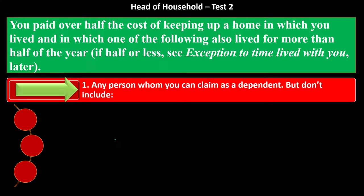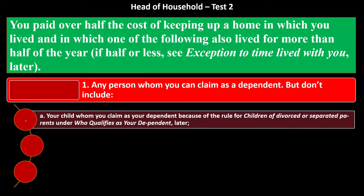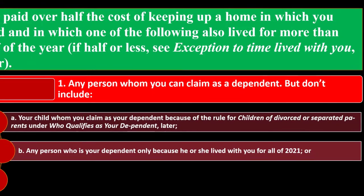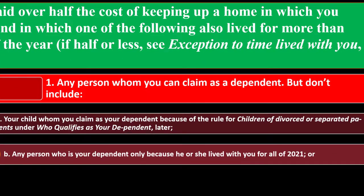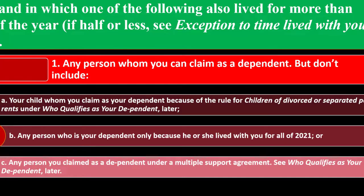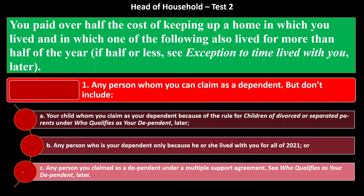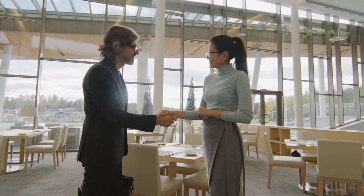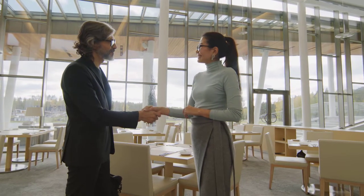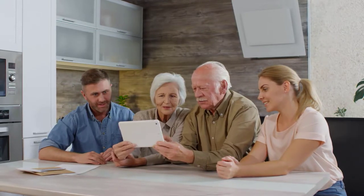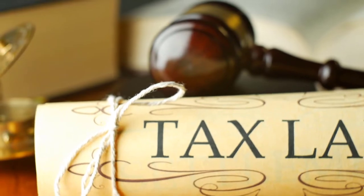The exceptions are: A) your child whom you claim as a dependent because of the rule for children of divorced or separated parents — you can see more on that exception later; B) any person who is your dependent only because he or she lived with you for all of 2021; or C) any person you claim as a dependent under a multiple support agreement. With a 50-50 support or living arrangement between two parents, the question becomes who claims them as a dependent for tax purposes — these are gray areas you have to dig into.